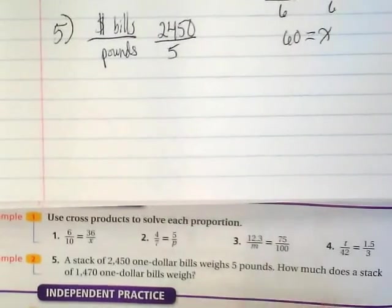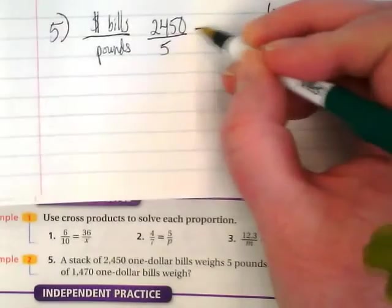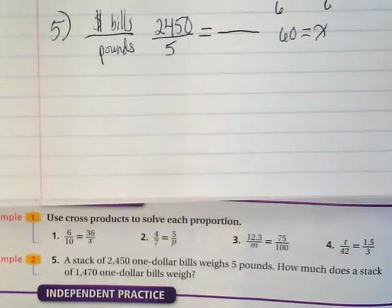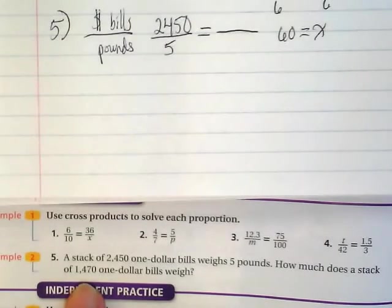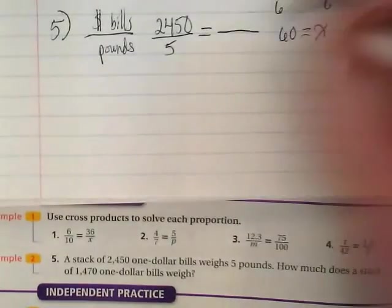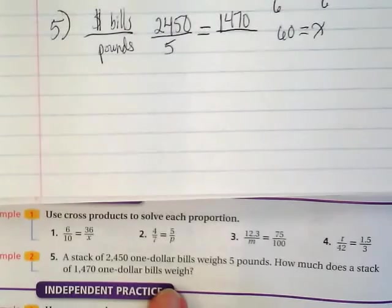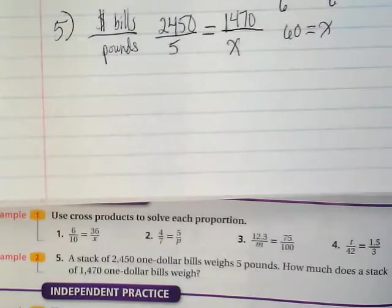And then the question is, how much does a stack of 1,470 one-dollar bills weigh? So let's set up a proportion by putting the equal sign. And where would we put this 1,470 on the top because it goes with the dollar bills. What's the question asking? How much does it weigh? That means we don't know what the pounds are, so we're going to put an X there.